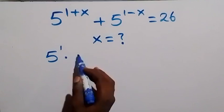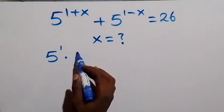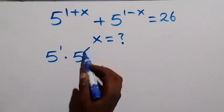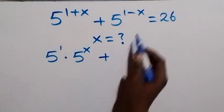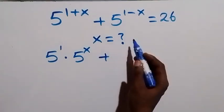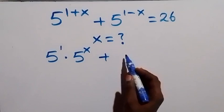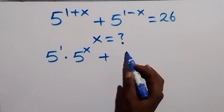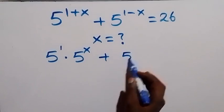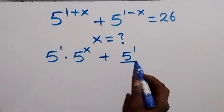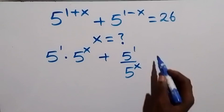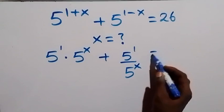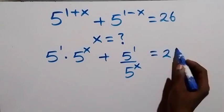Then, times here we have 5 raised to the power x. Plus, from here, this is subtraction in the index — that means we have division of a number in the same base. So, we have 5 raised to the power 1 divided by 5 raised to the power x, which is equal to 26 on this side.